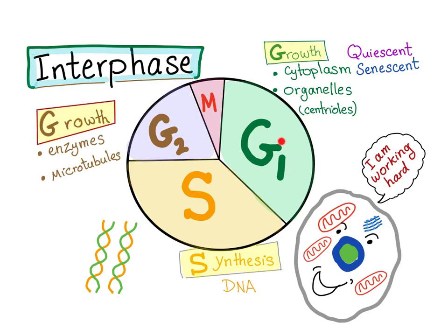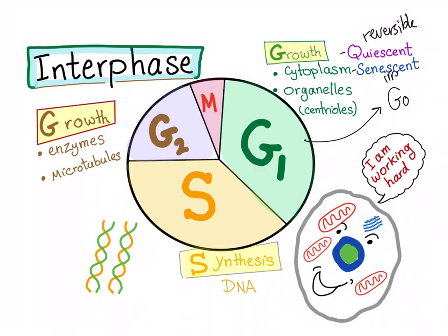In the G1 phase, the cell has some options. It can go on with the cycle to the S phase, or it can take some rest. The resting phase is called the G0 phase. In this phase, the cell is quiet and resting, and there are two types. One of them is reversible, and the other is irreversible.